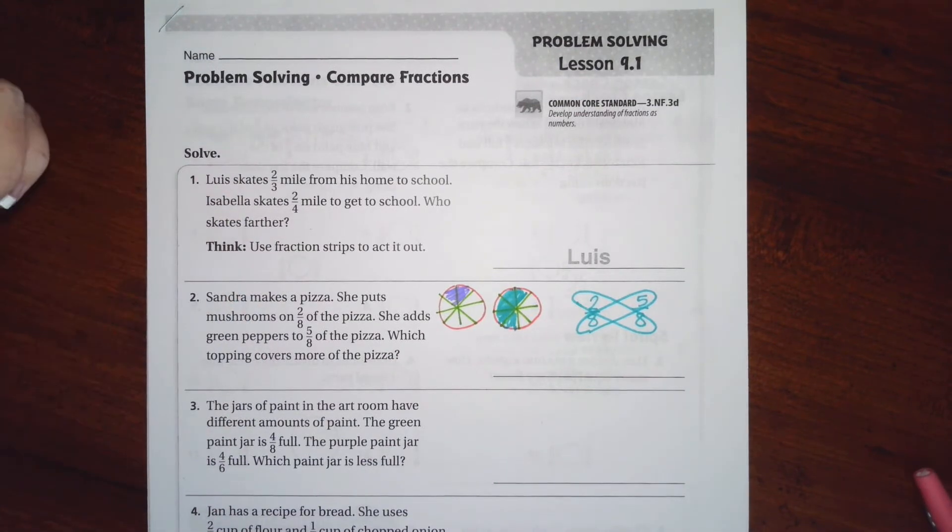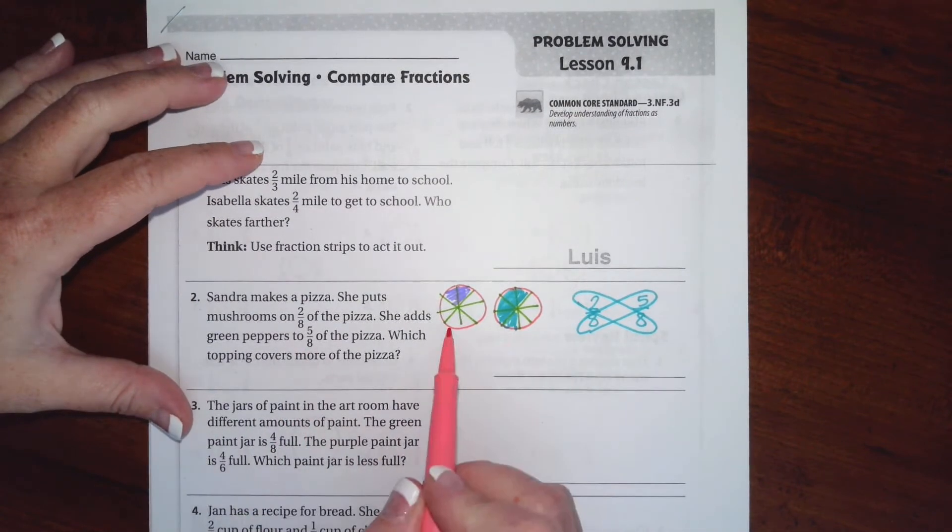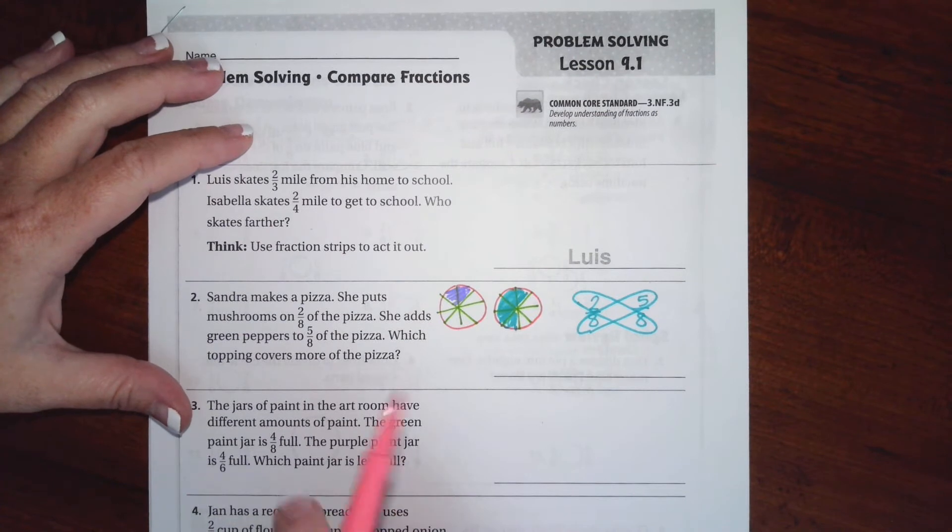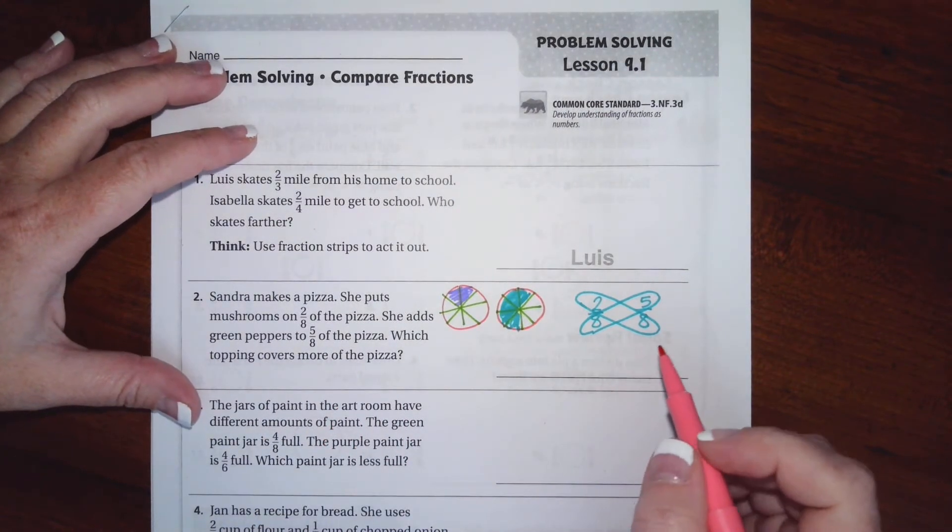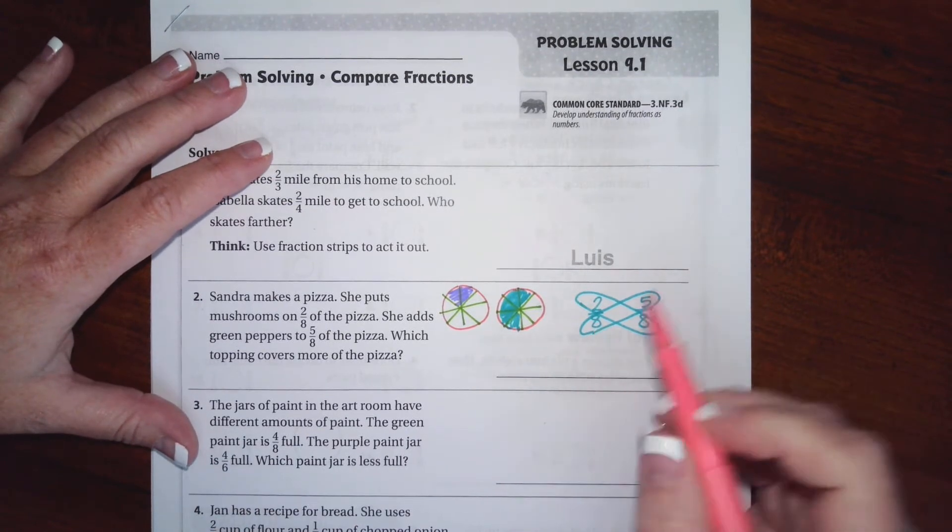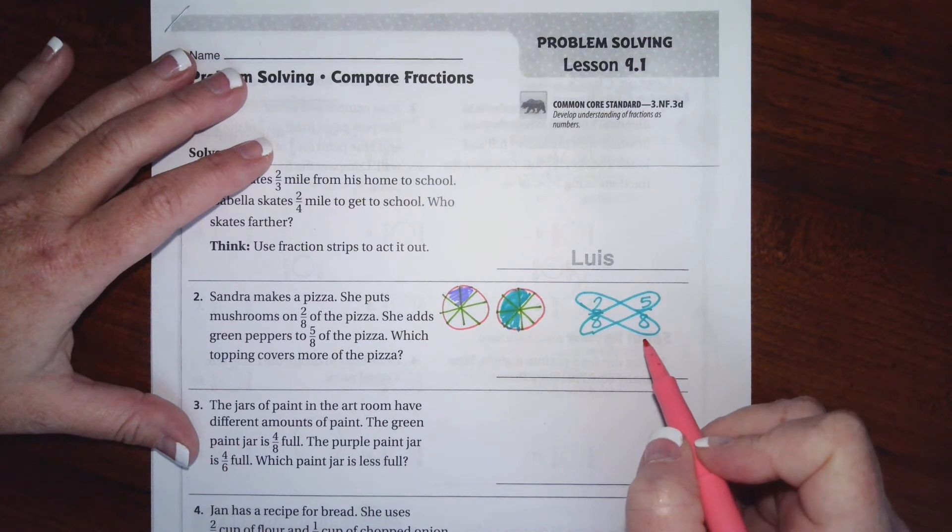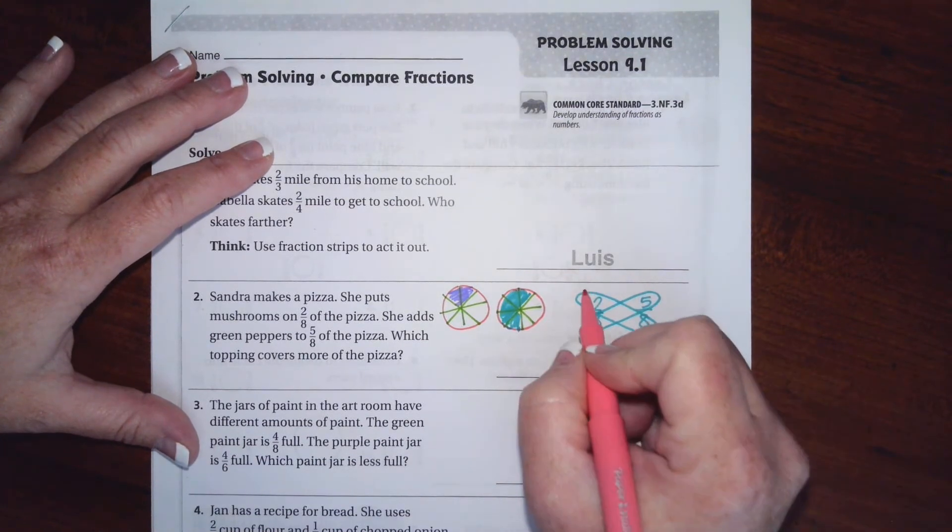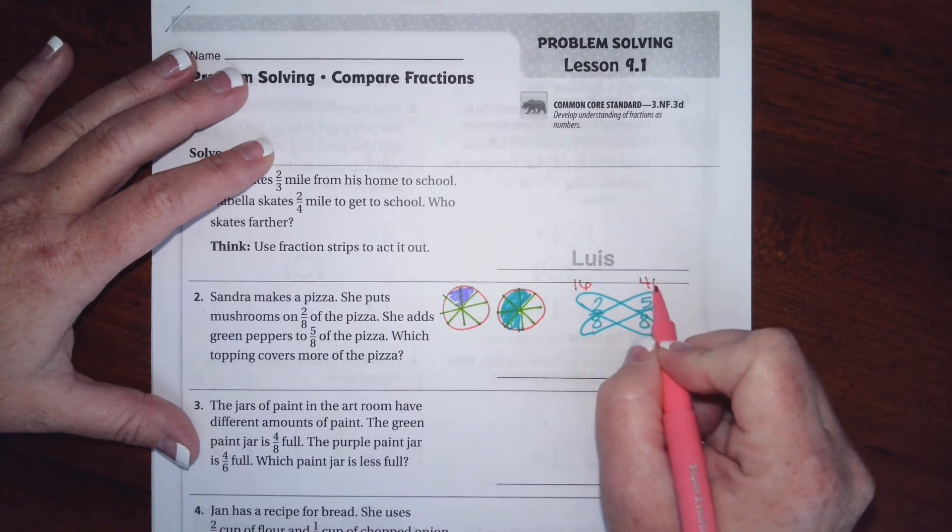Now, if they both have the same denominator like these ones do, then it's really easy to do this, although you can do it with anything else too when they don't have common denominators. But the easiest way is what we call butterfly. Butterfly is when we take the numerator of 1 and the denominator of the opposite one, and we multiply them. So 2 times 8 is 16.